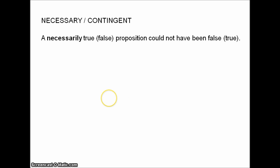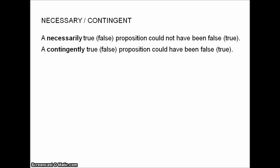Firstly, the distinction between necessary and contingent. A necessarily true proposition is one that could not have been false, and a contingently true proposition is one that could have been false. Fairly simple idea there.